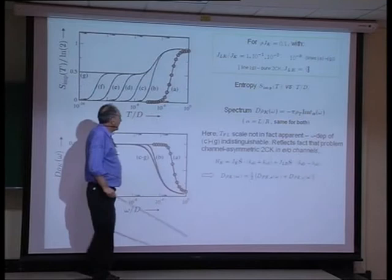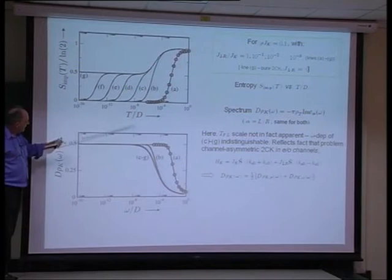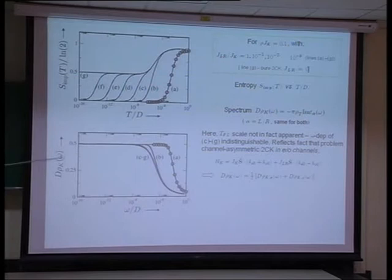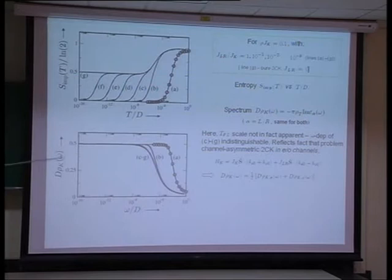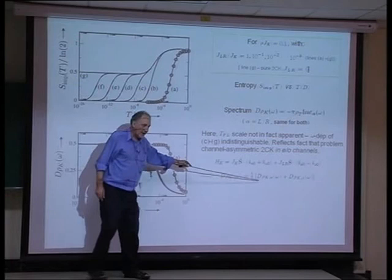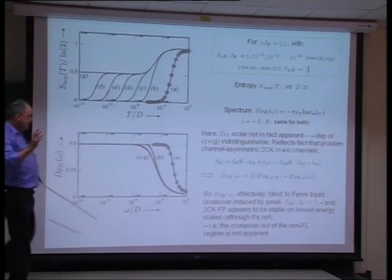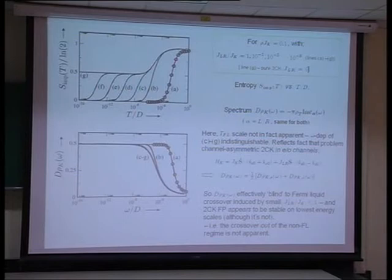But when you actually look at the spectrum — the channel-symmetric trace with left and right spectra being the same — you find a surprise. For cases C through G, corresponding to progressively smaller J_left-right, all the spectra are indistinguishable from each other as a function of frequency. The Kondo resonance is effectively blind to the Fermi liquid crossover induced by small inter-lead co-tunnelling charge transfer. This is because to construct the left or right spectrum one must take a combination of even plus odd channels, and the Fermi liquid signatures cancel. The two-channel Kondo fixed point then appears stable on the lowest energy scales, even though we know it's not.